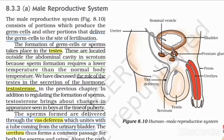Hello students, let us study about the male reproductive system. The male reproductive system consists of portions which produce the germ cells and other portions that deliver the germ cells to the site of fertilization. There are two important points for the male reproductive system.